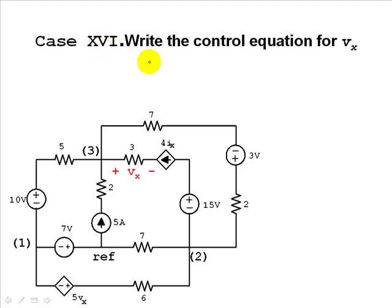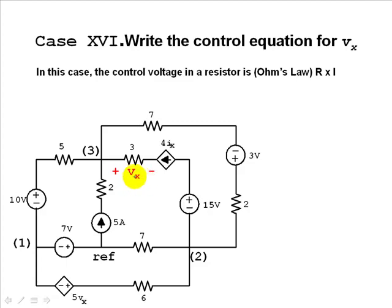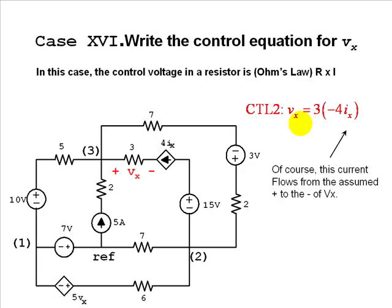Case 16: this voltage source depends on the voltage across this 3-ohm resistor. We use Ohm's law: Vx equals 3 ohms times the current flowing from high to low through the resistor. The current flowing to the right through that branch is the negative of 4·Ix, so Vx equals 3 ohms times negative 4·Ix. The current is negative 4·Ix because it must flow from the assumed positive to the assumed negative of the controlling variable Vx.